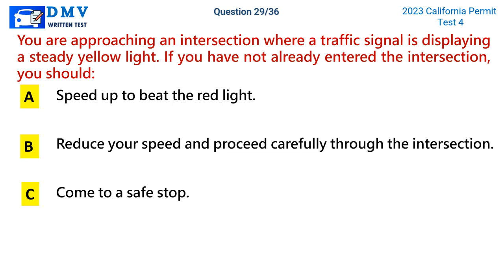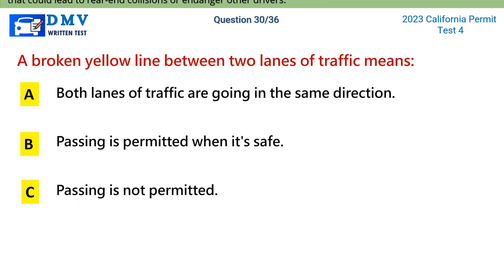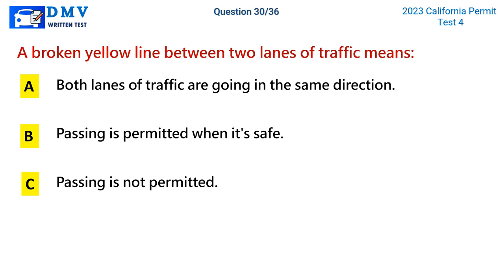Question 29: You are approaching an intersection where a traffic signal is displaying a steady yellow light. If you have not already entered the intersection, you should. A) speed up to beat the red light, B) reduce your speed and proceed carefully, C) come to a safe stop. The correct answer is C. When approaching a steady yellow light, slow down and come to a safe stop before the stop line or crosswalk if possible. However, if you've already entered the intersection when the light turns yellow, continue through at a speed that safely clears the intersection, avoiding sudden stops that could cause rear-end collisions.